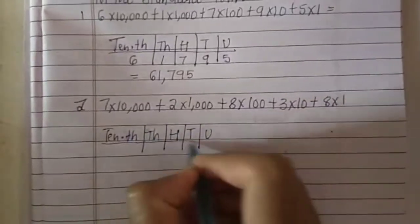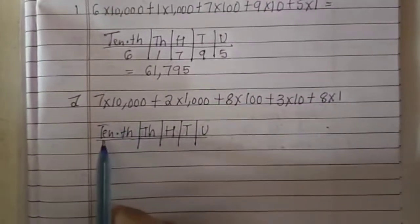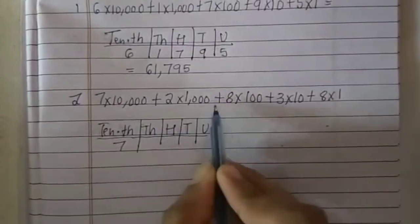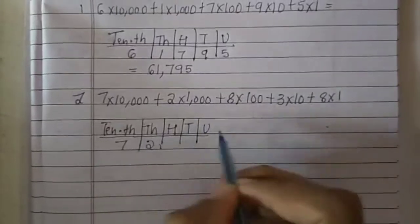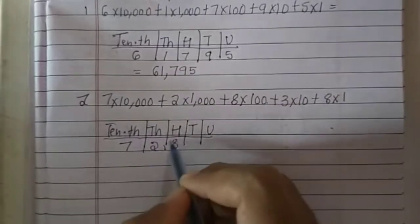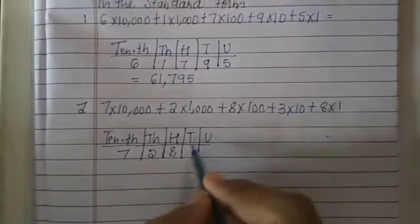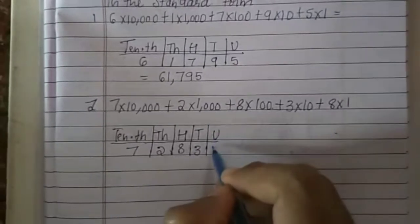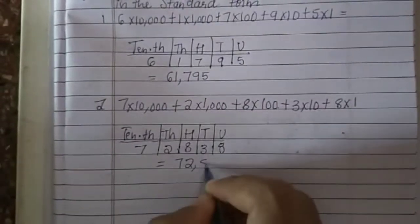I have written this in short form just to make you understand. So 7 into 10,000 becomes 70,000 — writing under the 10,000 place. Next, 2 into 1,000 is 2,000 — writing in the 1,000 place. Plus 8 into 100 is 800 — writing in the 100s place. Plus 3 into 10 is 30 — writing in the 10s place. And last, 8 into 1 is 8 — writing in the unit place. The standard form is 72,838.